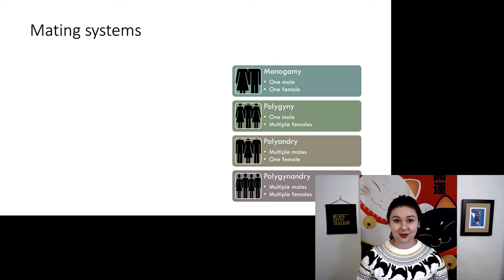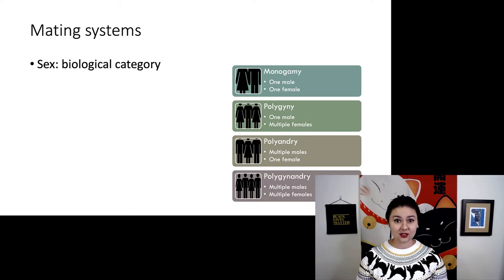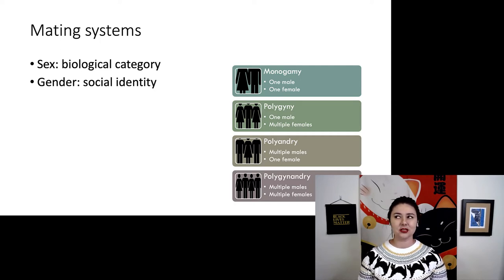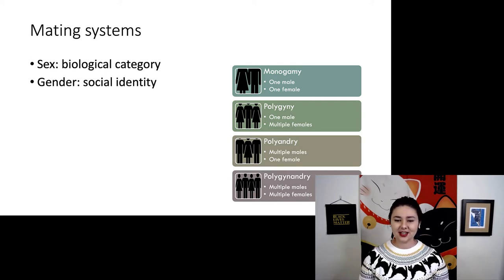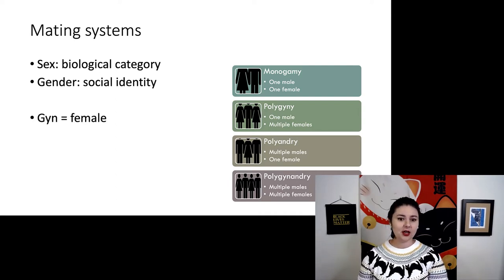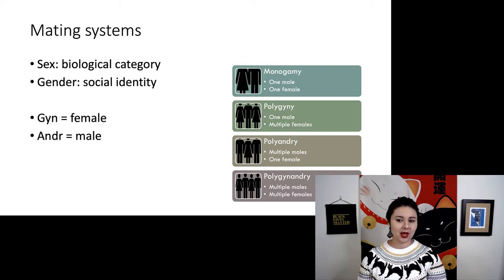There are a couple different systems we see within primates. First, remember that sex is a biological category and gender is a social identity. When we're talking about other primates, we're really not talking about gender at all because they probably don't have that concept. A couple of words will help you understand the terminology: 'gyn' or G-Y-N refers to females, and 'ander' refers to males. When you see those parts of words, that will give you a clue about what's going on.